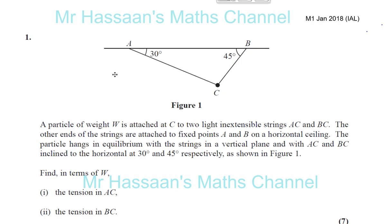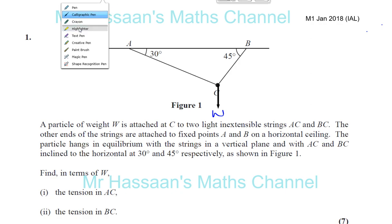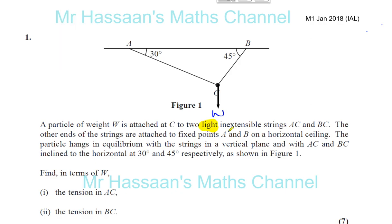A particle of weight W is attached to a sleeve. So this particle has a weight W, and the weight acts straight down. It's attached to two light inextensible strings, AC and BC. Light means we ignore their weight — there's no weight component from these strings whatsoever.